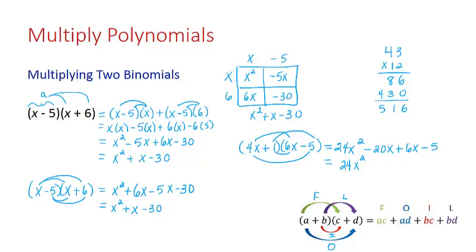So combining like terms, we have 24x squared, negative 20x plus 6x is negative 14x minus 5.